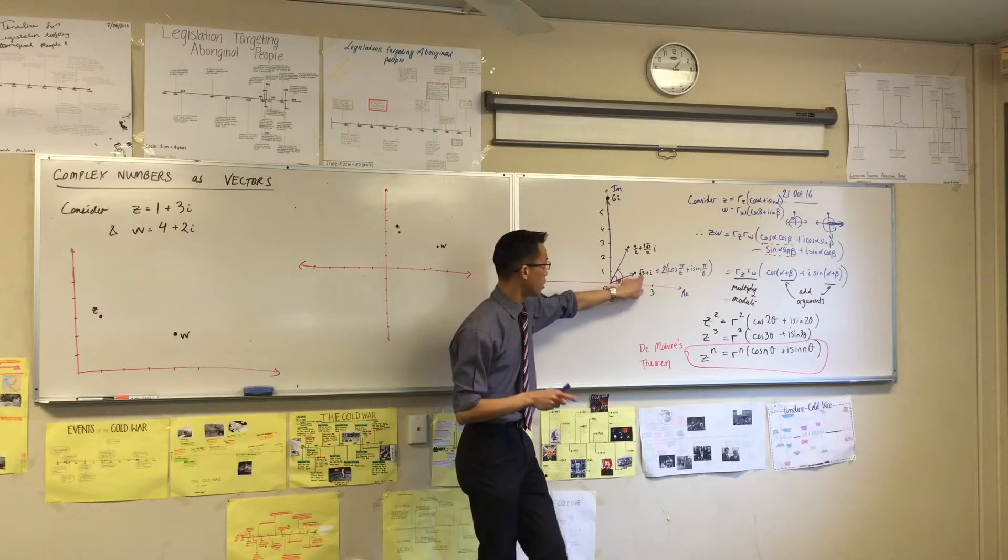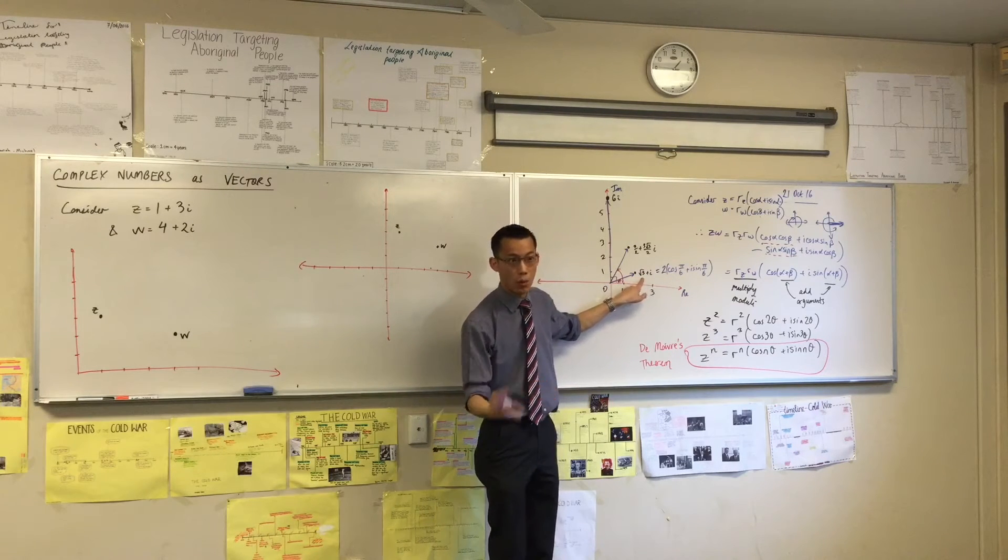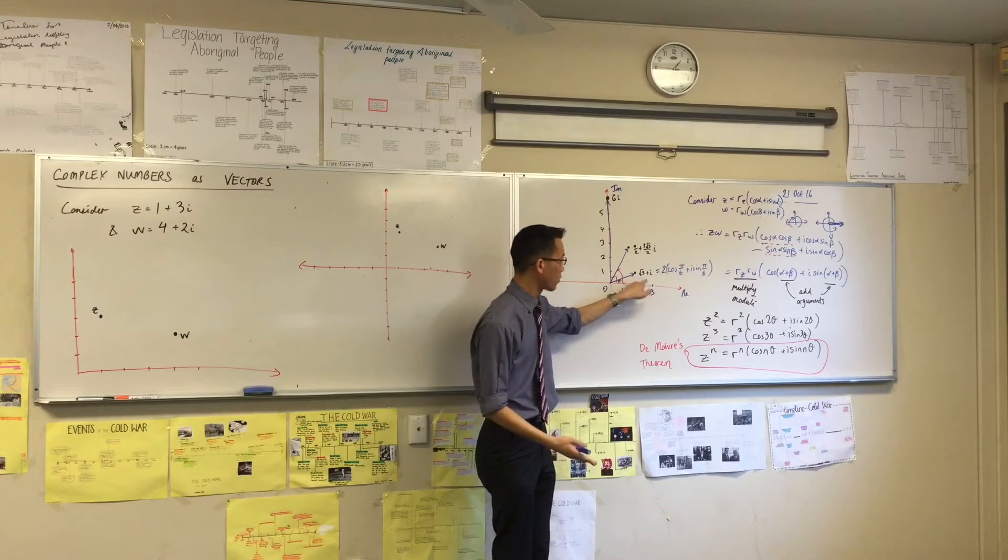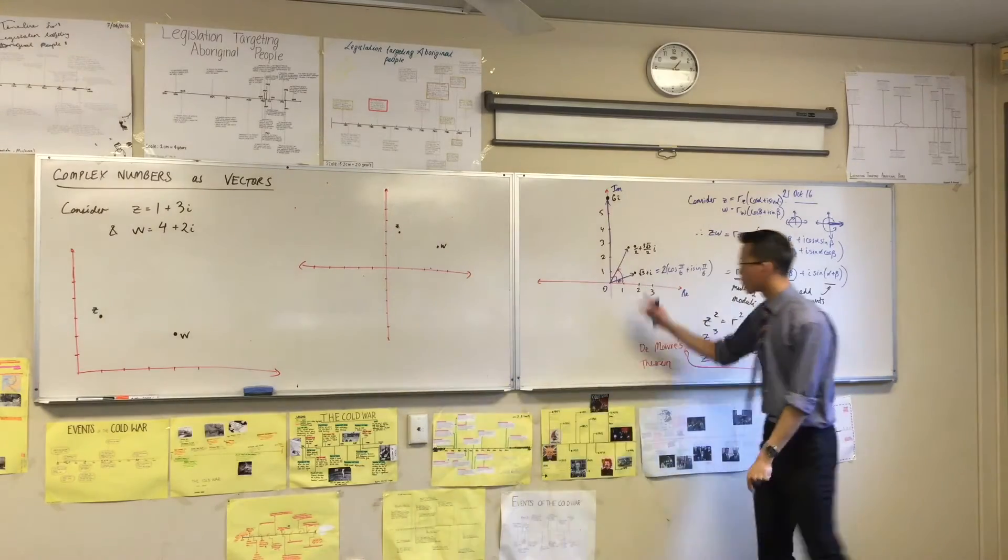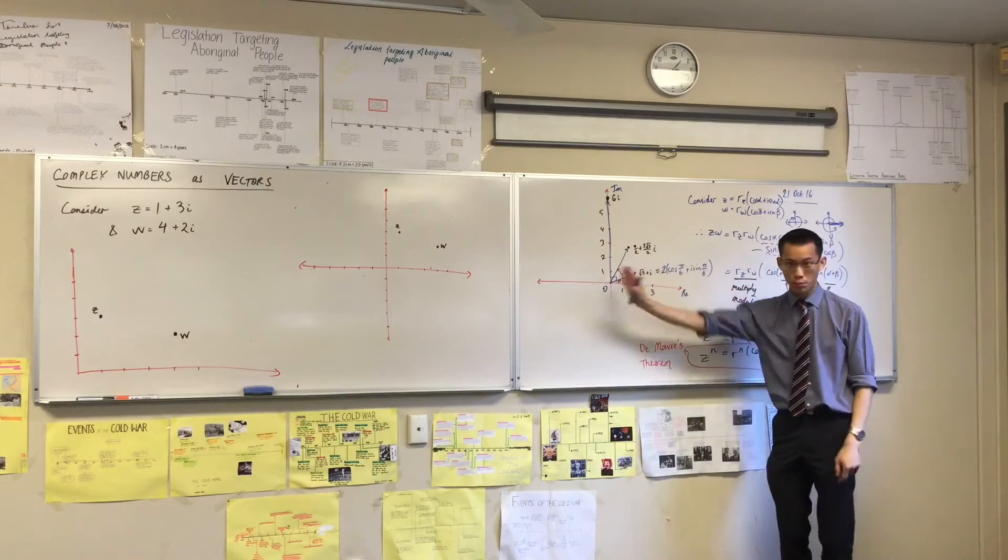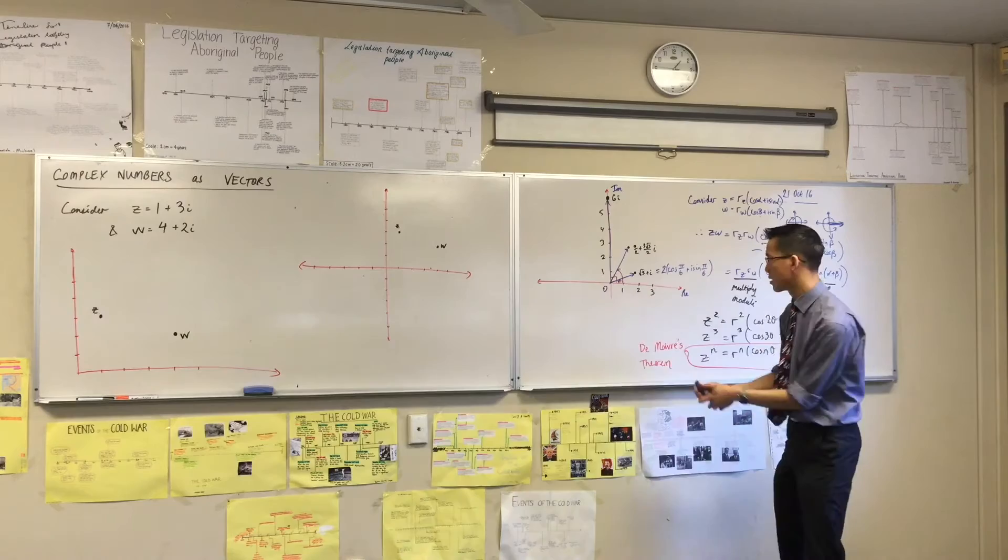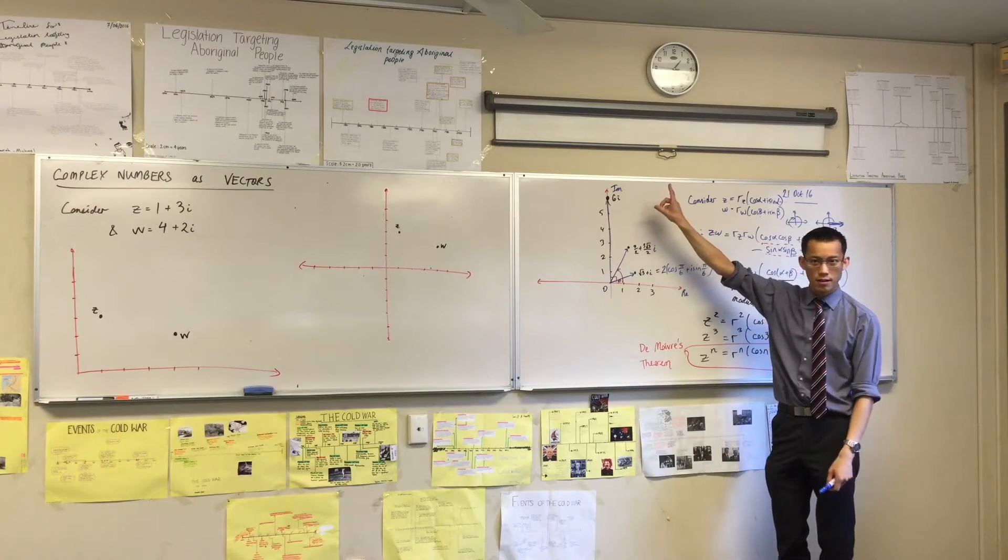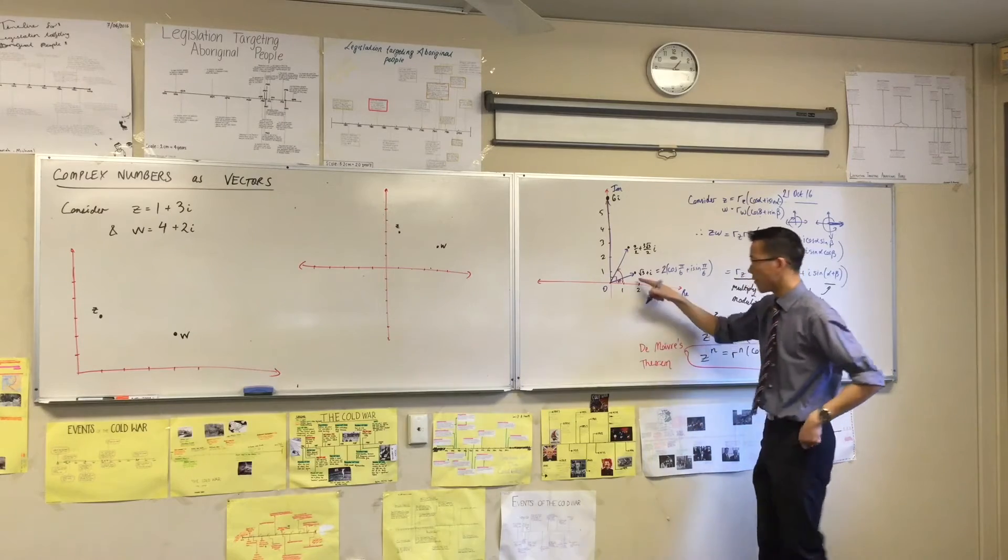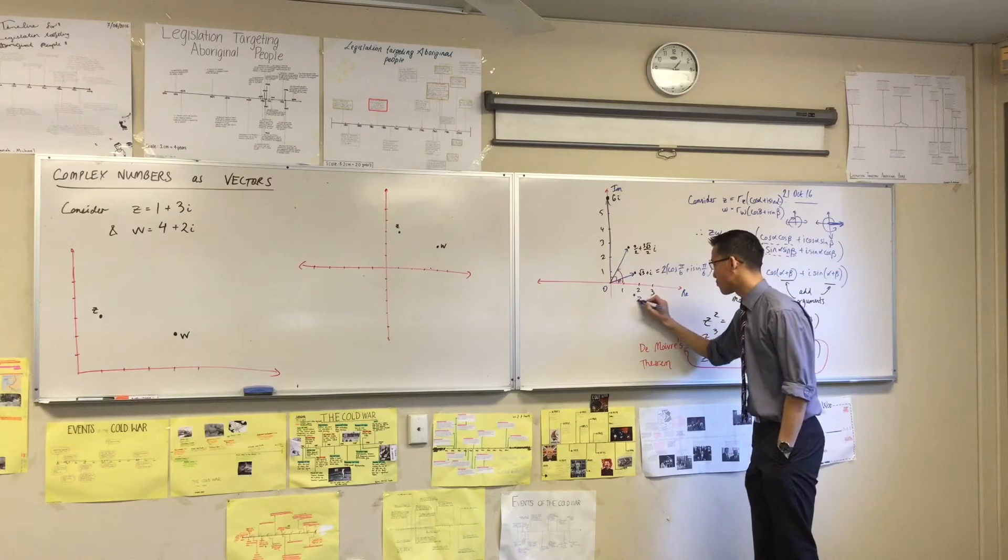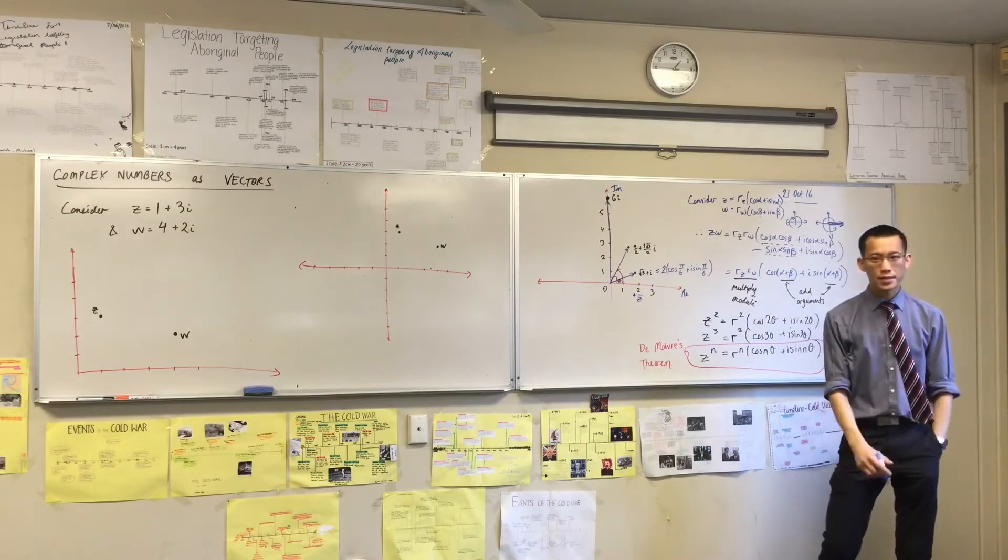So I can actually just write out what the complex conjugate is. Root 3 plus i is the original number, so root 3 minus i will be the conjugate. The root 3 means I'm the same horizontal position, but the minus i means I'm not going to go up that far, I'm going to go down. If that's where z is, then z bar is down here.